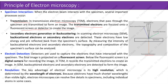Secondary electron generation or backscattering: in scanning electron microscopy, backscattered electrons or secondary electrons are detected. These electrons have low energy and are reflected back from the specimen's surface, as you can see here in the diagram. By measuring the intensity of backscattered electrons, the topography and composition of the specimen's surface can be analyzed.